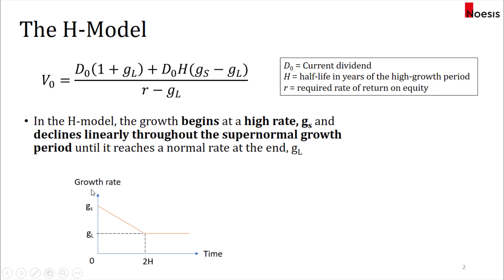In the graph below here, it plots out the growth rate against time, and this is the growth rate of the dividend. Initially it starts at a higher rate, which is G sub S, and it declines linearly over a period of 2H, and then at the end of this period it stabilizes at G sub L.